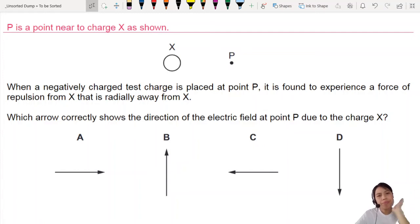Point P next to charge. When a negatively test charge is placed at P, it's found to experience a repulsion from X that is radially away from X. Which arrow shows the direction of electric field? We are looking for electric field at point P due to charge X.